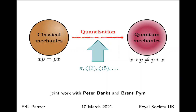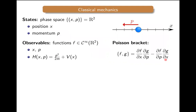Let me remind you of some basic aspects of classical mechanics. Suppose we have a single particle moving in one dimension — it has a coordinate x and a momentum p. We parametrize the possible states of the system in the so-called phase space, which in this case is a two-dimensional vector space with coordinates momentum and position.